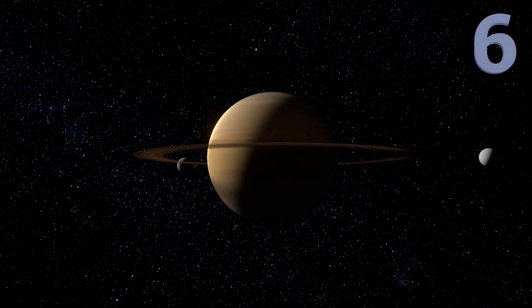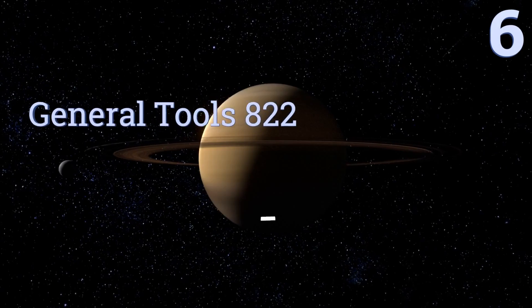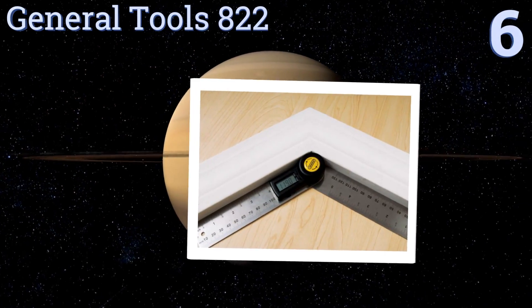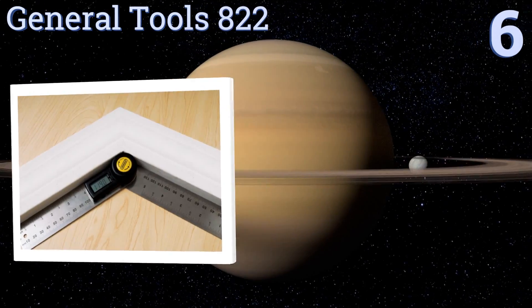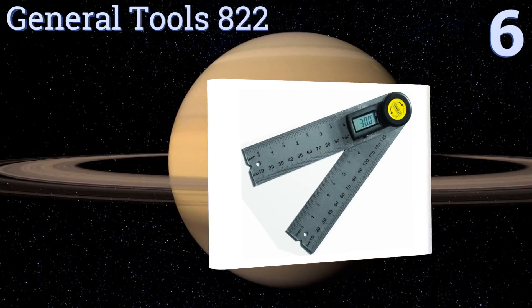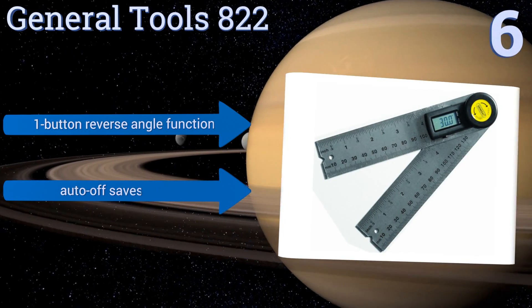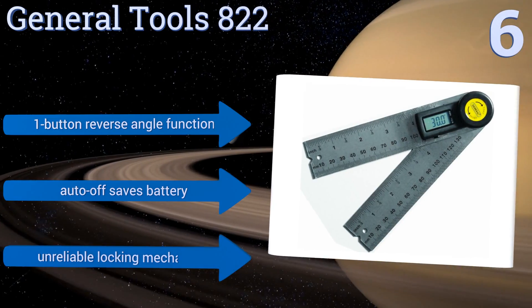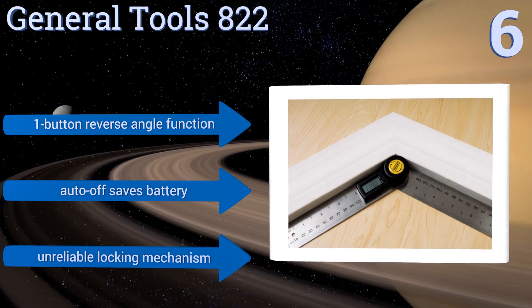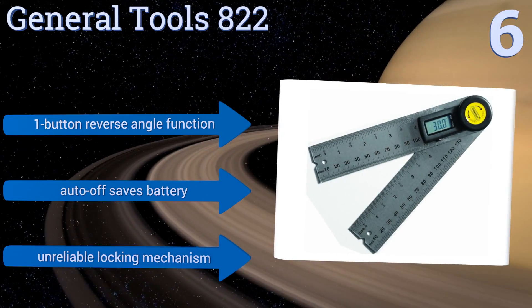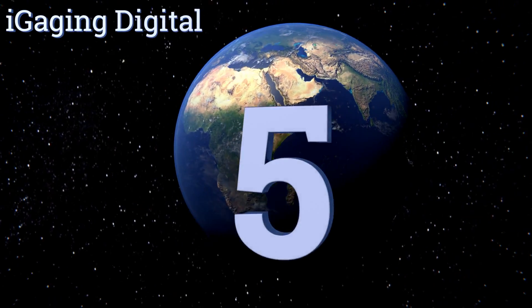Moving up our list to number six, when you think of a protractor, even a digital one, you probably don't associate it with Bluetooth technology. But that's exactly what the General Tools 822 comes equipped with. This allows you to automatically save crucial data to your phone. It features a one-button reverse angle function and an auto-off that saves the battery. However, it also comes with an unreliable locking mechanism.